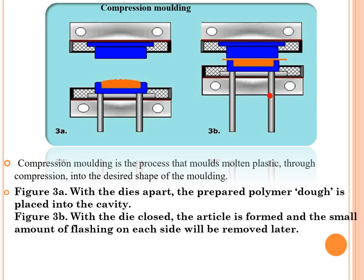The next method is compression molding. Look at this image: this is the plastic taken in a mold and we just apply pressure from the top, so whatever is the shape of the mold will be acquired by the plastic. Compression molding compresses molten plastic into the desired shape. The soft plastic — called a dough, a polymer dough — is placed in the cavity between the upper die and lower die, and then you compress or press it to get the desired shape.